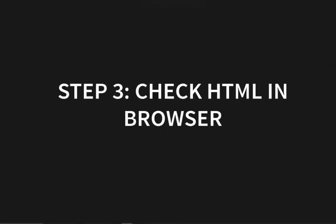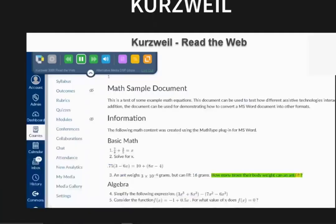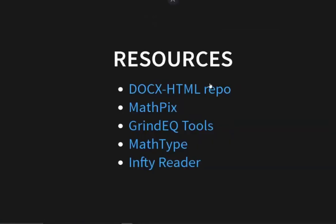I realize I'm out of time. I've shared this slideshow with Philip, who can share it with everyone. There are just a couple more steps to follow to check that your HTML output is correct, such as checking the HTML in the browser and checking with assistive technology. We've included resources about where to get our DocXHTML script and all the OCR tools and math authoring tools mentioned. If you have any questions about our workflow, feel free to let me know.